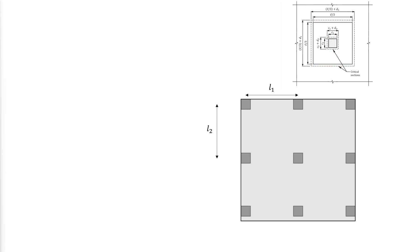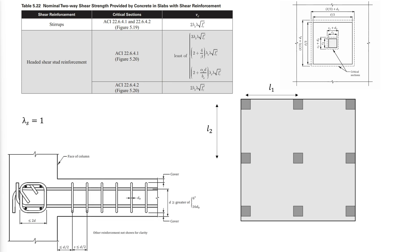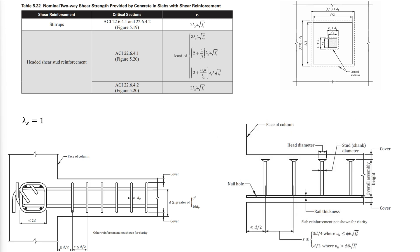The strength of two-way slabs in two-way shear with reinforcement is determined according to the following table. Lambda-s is allowed to be taken as 1 if stirrups are provided and detailed according to the specified rules. If headed shear studs are provided as reinforcement, different detailing requirements must be met instead. This also requires that a specific condition is satisfied for both cases. AV is the total area of stirrup legs or headed shear studs on one peripheral line geometrically similar to the perimeter of the column section, within spacing s.